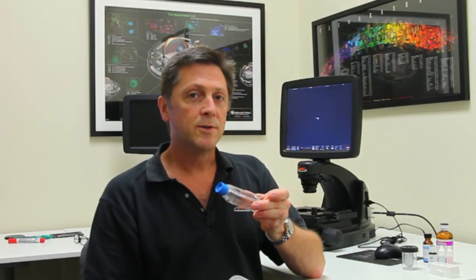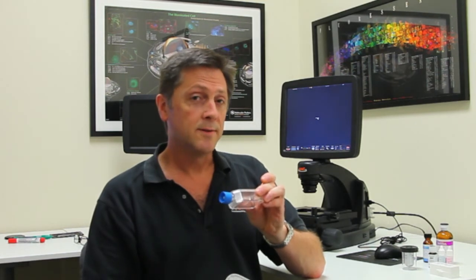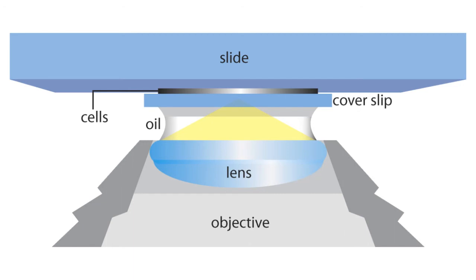These kinds of samples can be visualized using long working distance objectives, but an oil immersion objective requires your sample to be prepared with a glass cover slip. The oil goes between the objective and that cover slip, providing this optical link to give you maximum resolution and brightness.